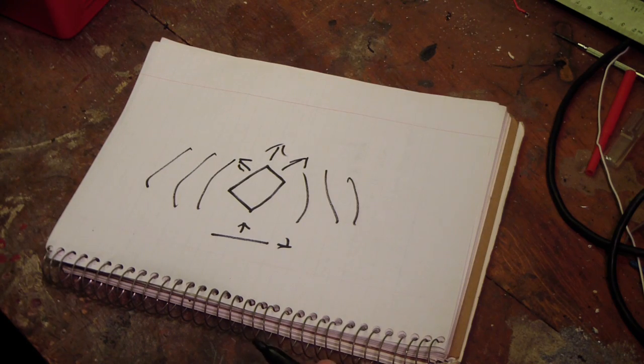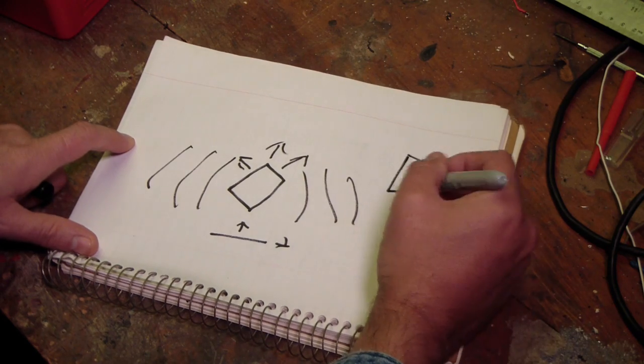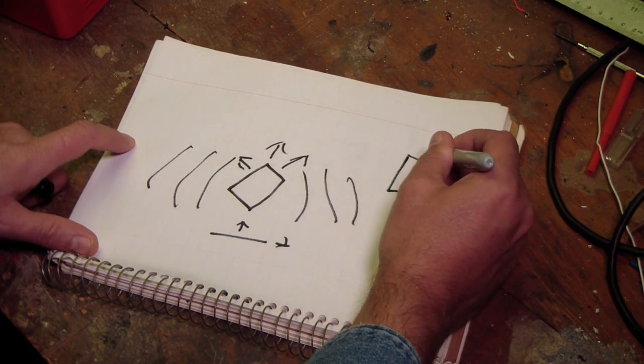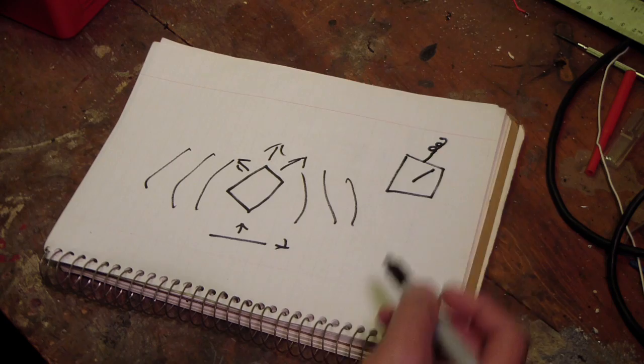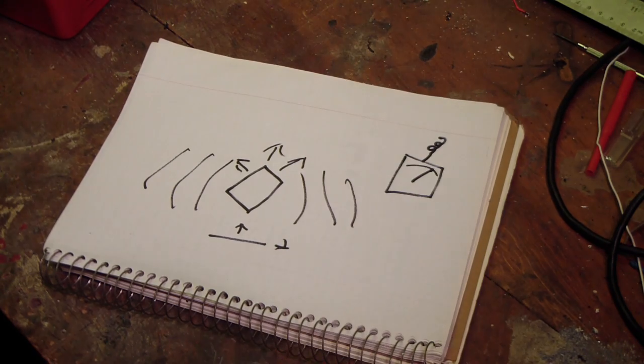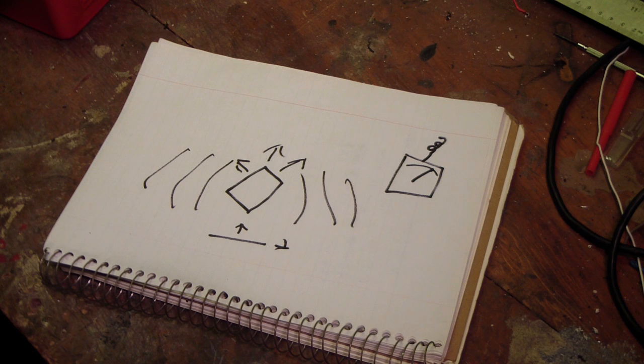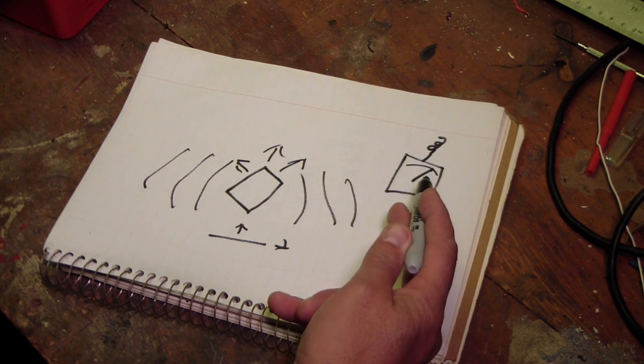And to do that, you need a tool called a field strength meter. A field strength meter is really nothing more than a meter with a length of wire for an antenna, some rectification to rectify the RF into DC, and an adjustment for sensitivity so you don't overdrive the meter. A very simple tool.